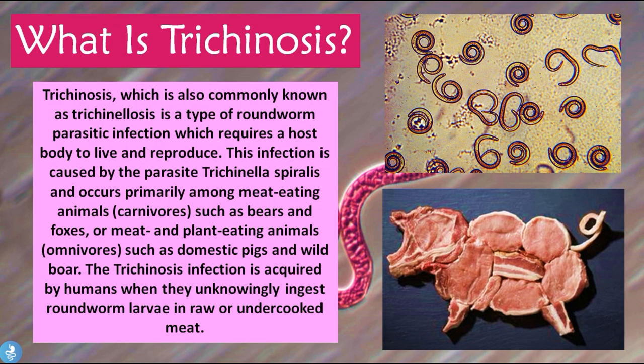So what is trichinosis? Trichinosis, also commonly known as trichinellosis, is a type of roundworm parasitic infection which requires a host body to live in and reproduce. This infection is caused by the parasite Trichinella spiralis and occurs primarily among carnivores such as bears and foxes, or omnivores such as domestic pigs and wild boar. Humans acquire it by unknowingly ingesting roundworm larvae in raw or undercooked meat.